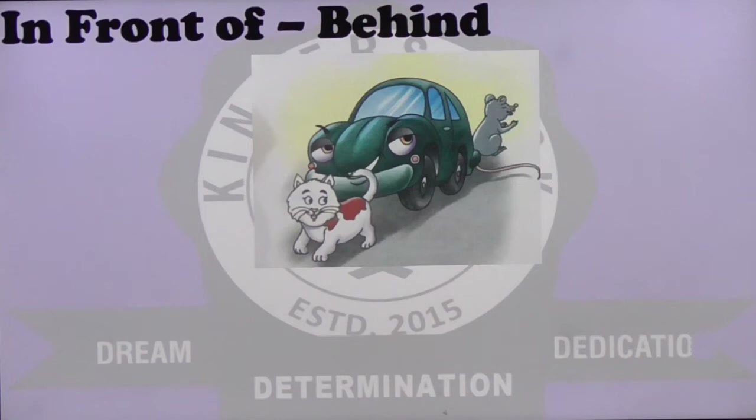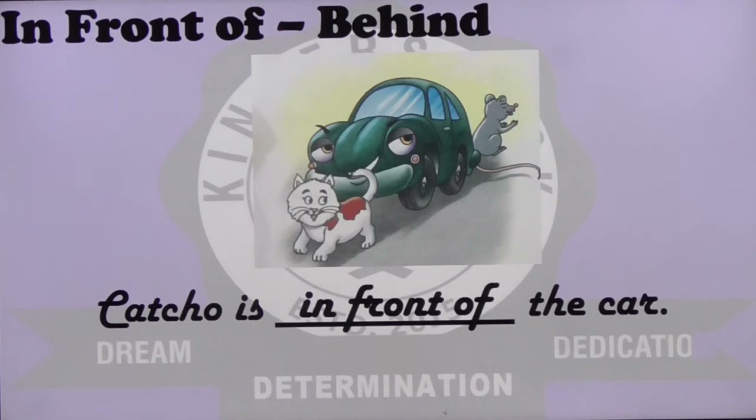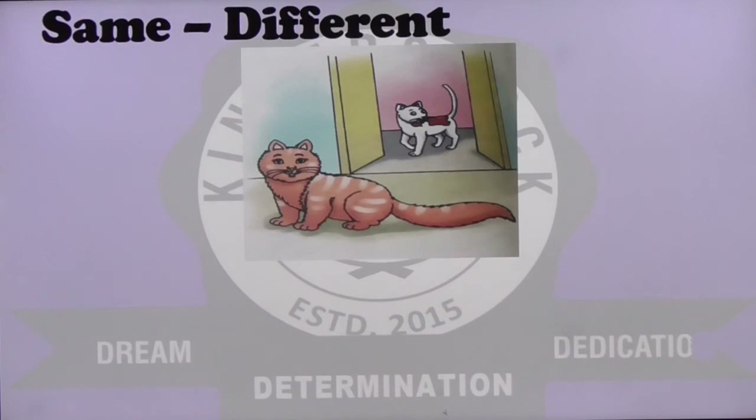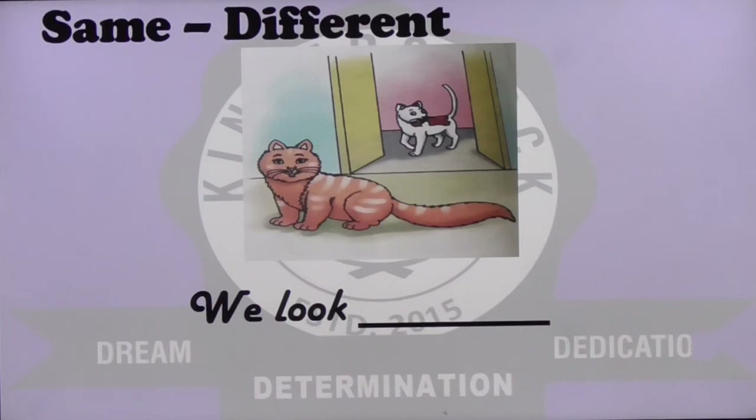In front of and behind: there we have a car and the cat. Catcho is in front of the car and the rat is behind the car. So Catcho is in front of the car and Ratty is behind the car.